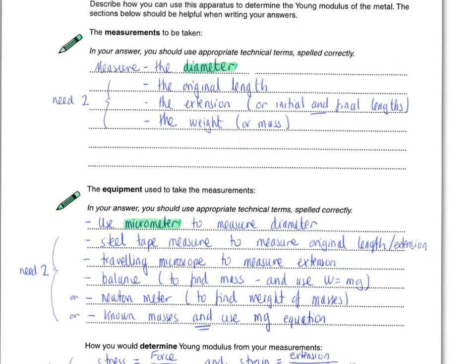What they had in the mark scheme here was the idea of using a traveling microscope. Now, a traveling microscope is a microscope essentially with crosshairs in the eyepiece. So you can line it up to be focused on a particular object. And then you can move it side to side. So when you load it up, you could have a mark on the wire.